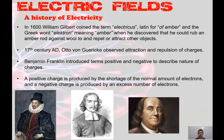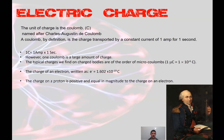In the 17th century, Otto von Guericke observed attraction and repulsion of charges. Then Benjamin Franklin came along and introduced the terms positive and negative to describe the nature of charges. A positive charge is produced by a shortage of the normal amount of electrons, and a negative charge is produced by an excess number of electrons.